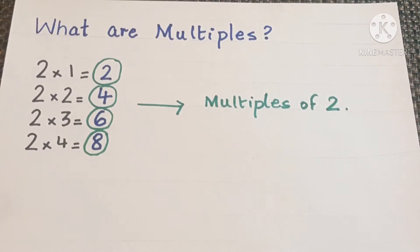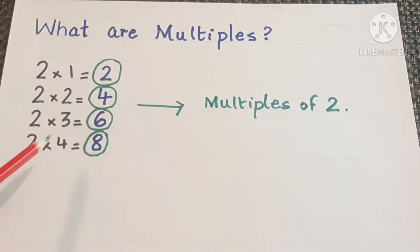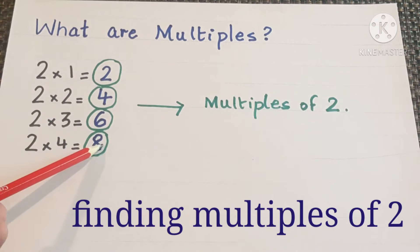Today we will learn about multiples. Now as you know the table of 2, 2 times 1 is 2, 2 times 2 is 4, 2 times 3 is 6, 2 times 4 is 8. 2, 4, 6, 8 are multiples of 2.